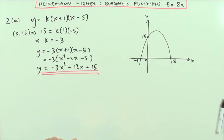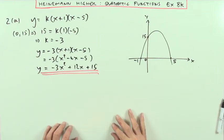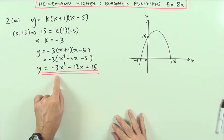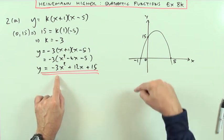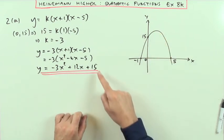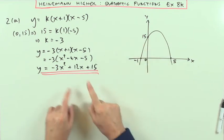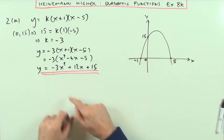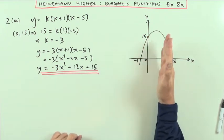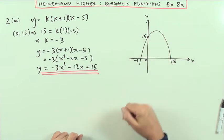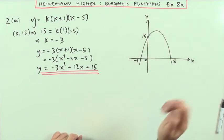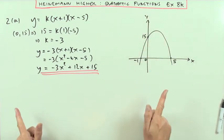Just checking that all features are confirmed in this graph in case there's a mistake with signs. It should be upside down with a negative coefficient, and it is. It should cut the Y axis at 15, and it does. These signs being opposite means the axis of symmetry should be on the right, and it is. That was part A.